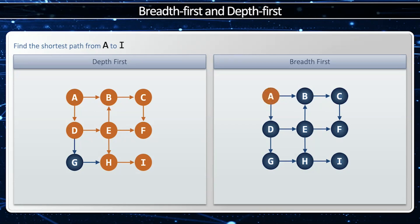So here I'm going to start at A, and then I'm going to find everything that A connects to, and this will be all of length one. And then I'll take all the elements that A found, which is B and D, and I'll go one spot from there, and this will be of length two. And then I'll take everything that those two found, which is C, E, and G, and that'll be length three. And then finally, I will find everything that that found, which is H, and that'll be length four, and that is the shortest path.